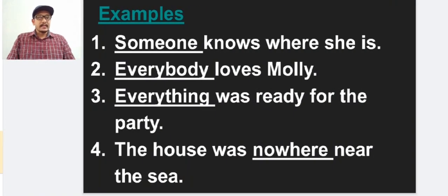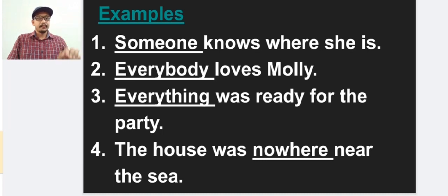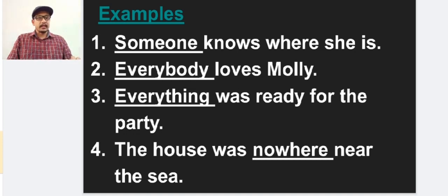Here are some examples. 'Someone knows where she is' — someone is underlined as an indefinite pronoun. It looks plural but it is singular, representing only one. 'Everybody loves Molly' — everybody means every single body; it looks plural but is actually singular. 'Everything was ready for the party' — every single thing. 'The house was nowhere near the sea.' These are examples of indefinite pronouns and they should always take singular verbs.